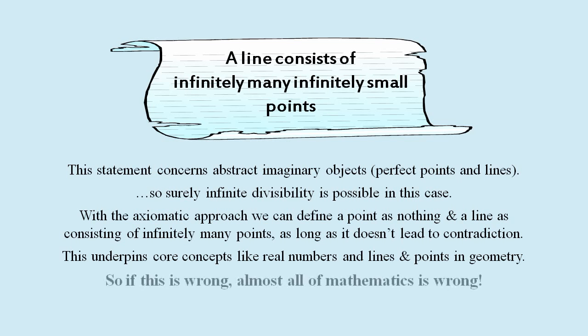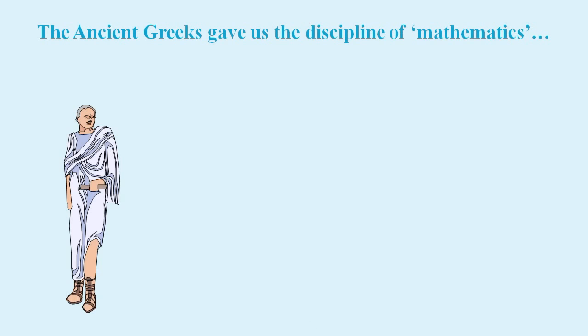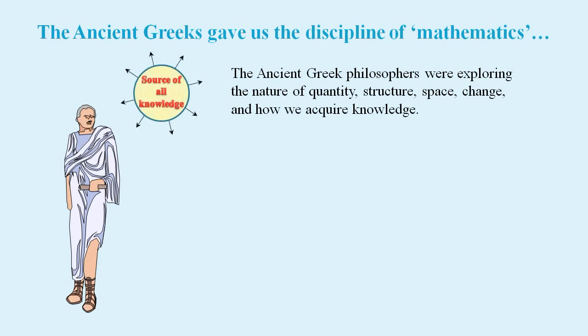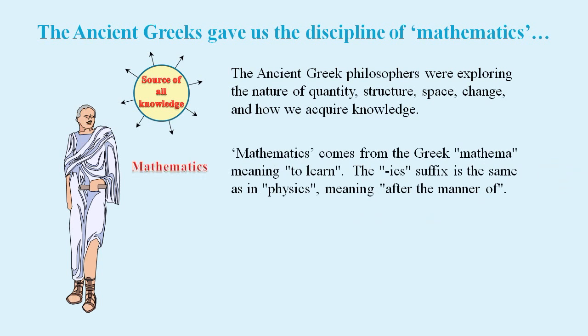Fundamental principles like these were often discussed by ancient Greek philosophers. They were exploring the nature of quantity, structure, space, change, and how we acquire knowledge. The word mathematics comes from the Greek language. But even after all this time, there's still no generally accepted description of exactly what mathematics is.